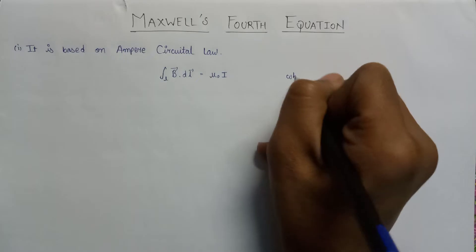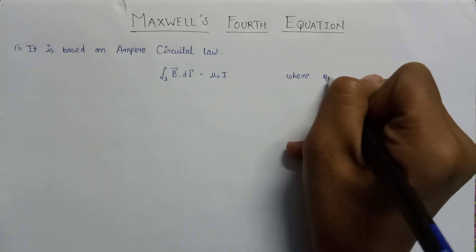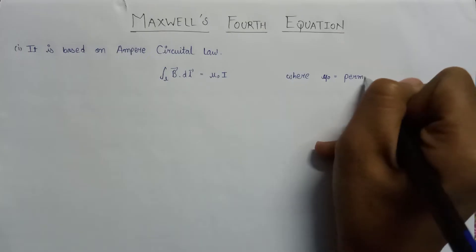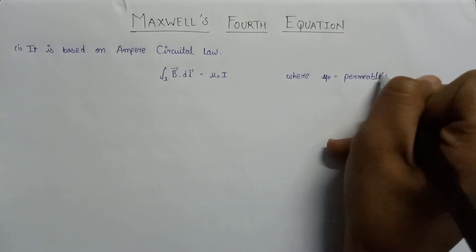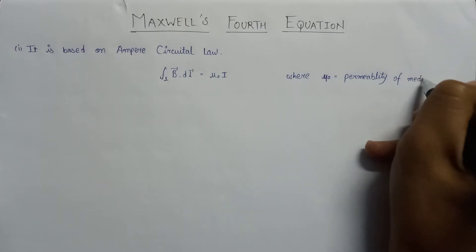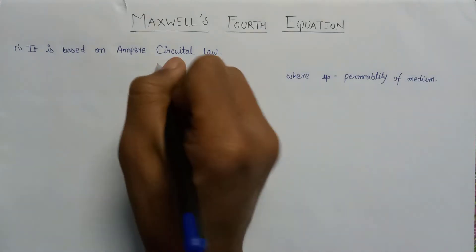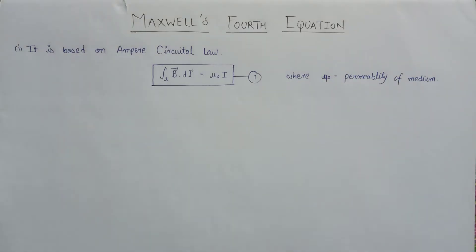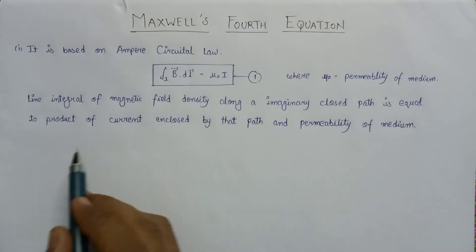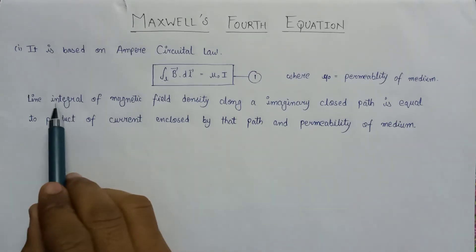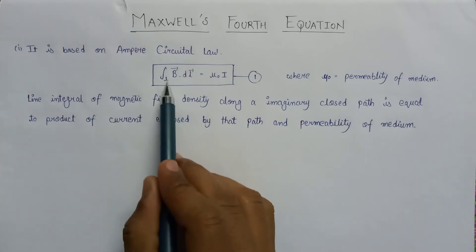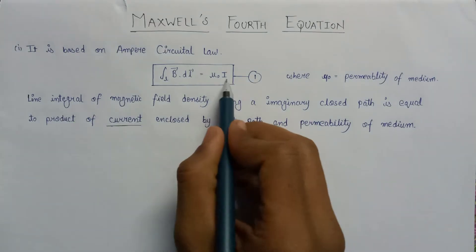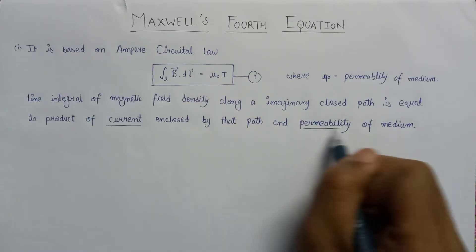Here, μ₀ is equal to the permeability of the medium. This is our Ampere Circuital Law — let us call it equation number 1. The line integral of the magnetic field along an imaginary closed path equals the product of the current I enclosed by the path and the permeability μ.